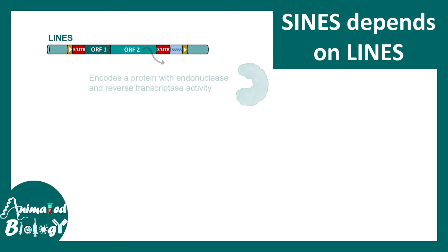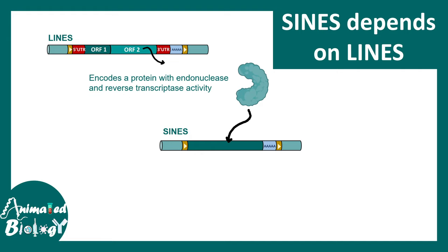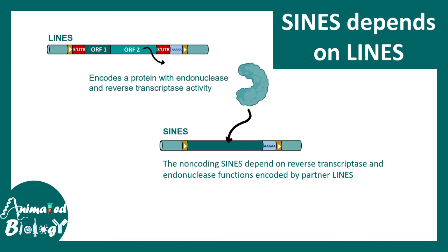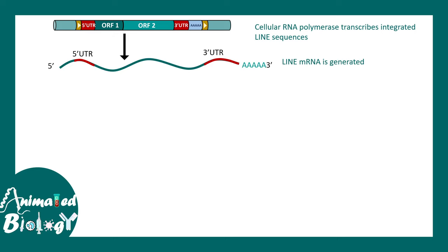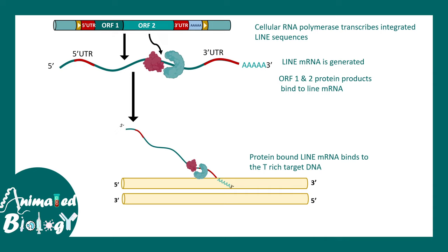LINEs encode a protein with endonuclease and reverse transcriptase activity. This enzyme is important not only for LINE integration but also for SINE integration, since SINEs cannot produce their own proteins and depend on LINEs for reverse transcriptase and endonuclease activity. For integration, the LINE mRNA first gets transcribed, producing an mRNA with 5' UTR, 3' UTR, and a poly-A tail. The ORF2 products then bind to this mRNA and guide it toward the target DNA.